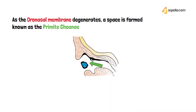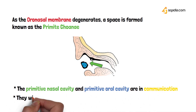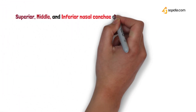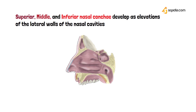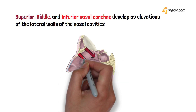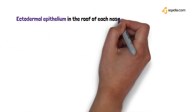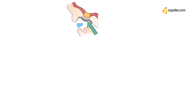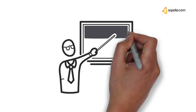As the oronasal membrane degenerates, a space is created known as the primitive choana, and the primitive nasal cavity and primitive oral cavity come into communication. This is eventually separated by the development of the palate. The superior, middle, and inferior nasal conchae develop as elevations on the lateral wall of the nasal cavity. Finally, the ectodermal epithelium in the roof of the nasal cavity specializes to form the olfactory epithelium.